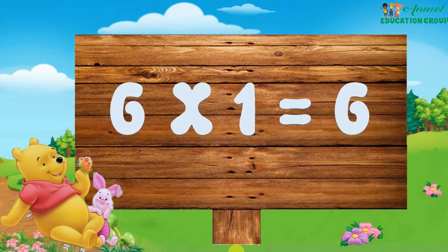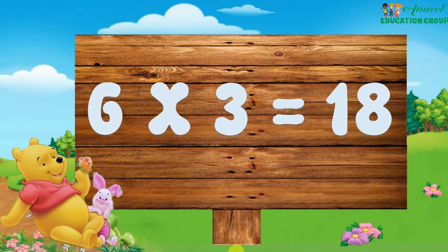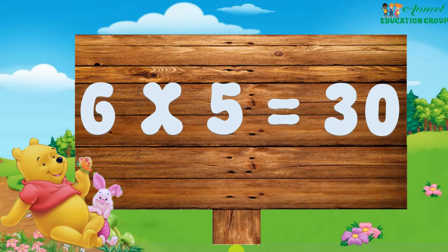Six one are six. Six two are twelve. Six three are eighteen. Six four are twenty-four. Six five are thirty.